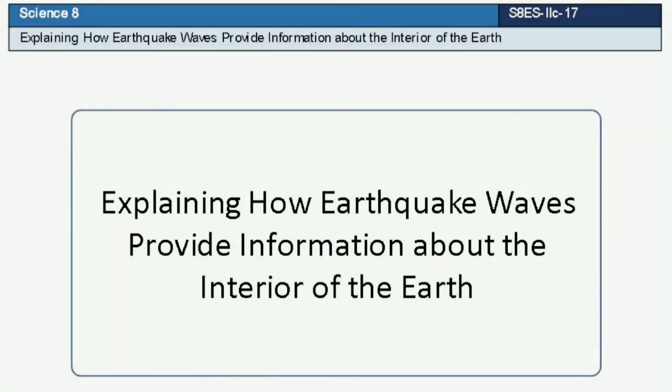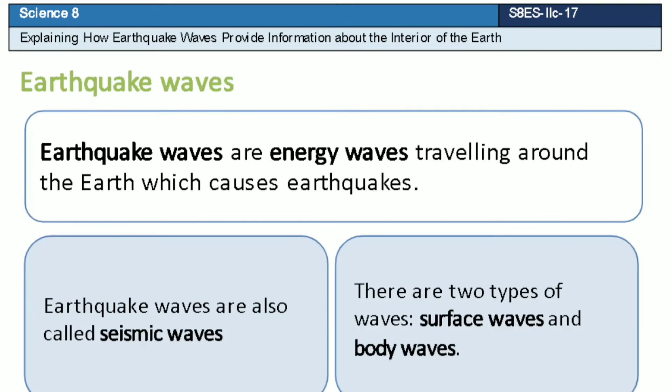Hi! Our topic is about explaining how earthquake waves provide information about the interior of the Earth. Let's begin. Earthquake waves are energy waves traveling around the Earth which causes earthquakes. Earthquake waves are also called seismic waves. There are two types of waves: surface waves and body waves.